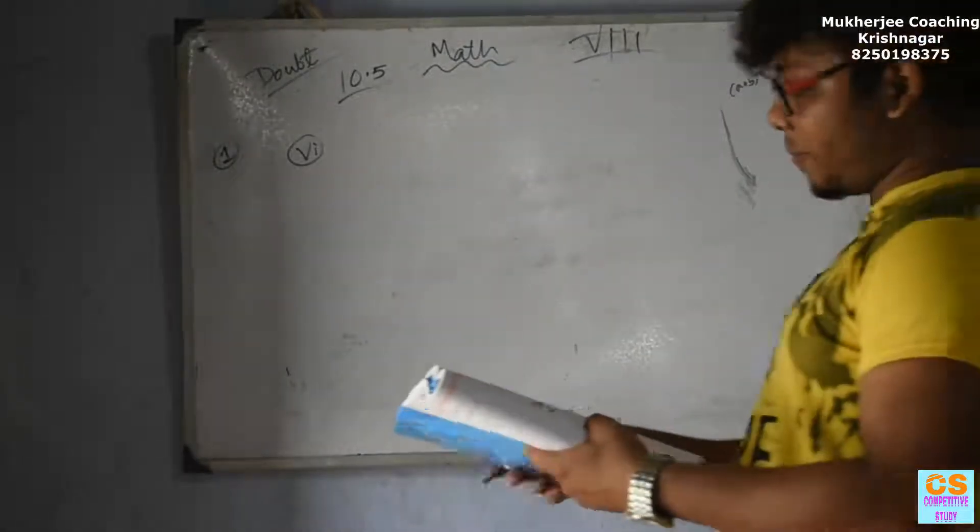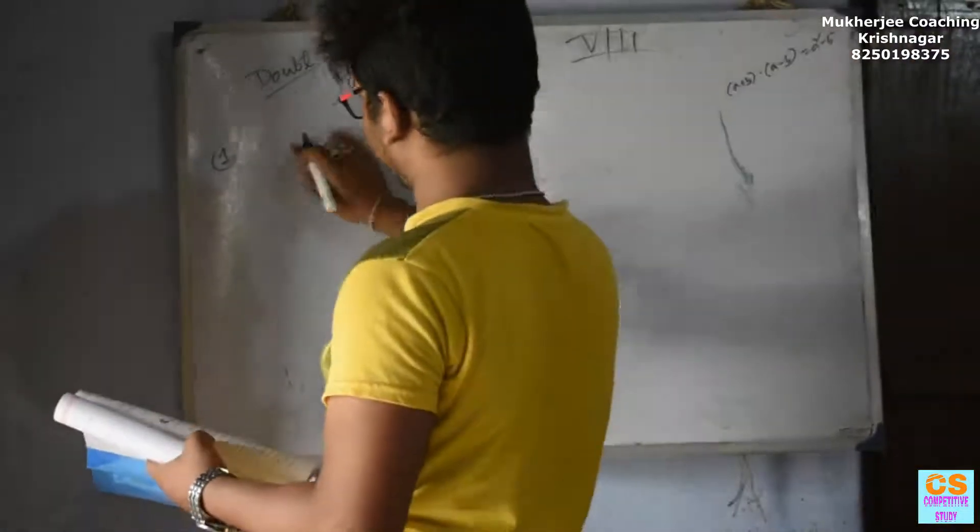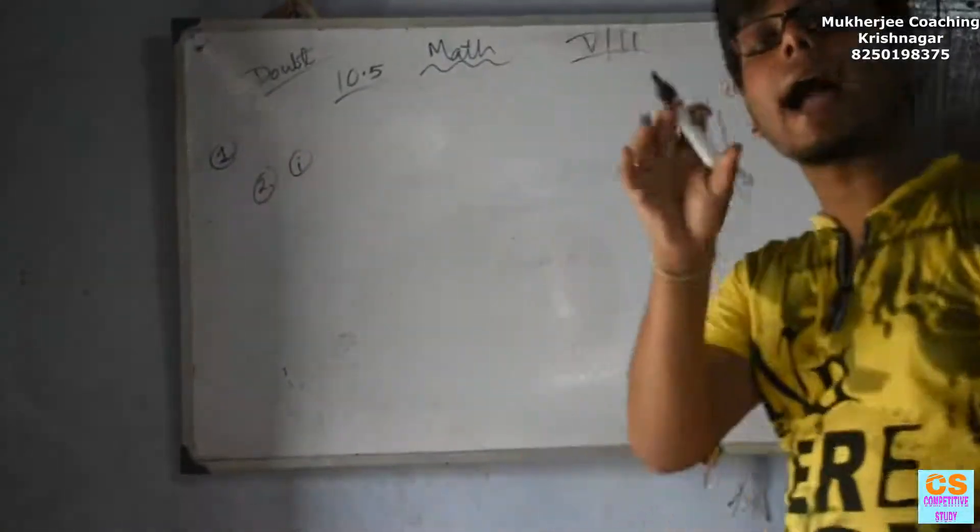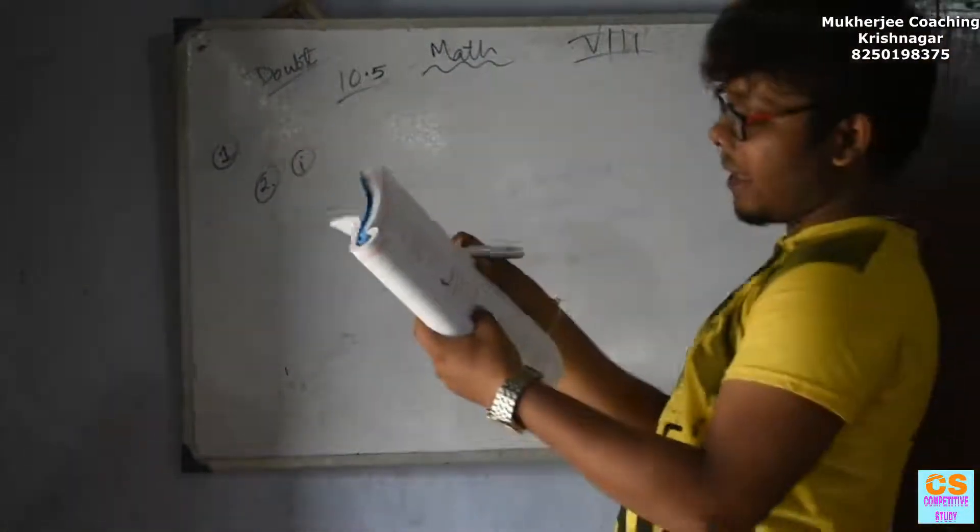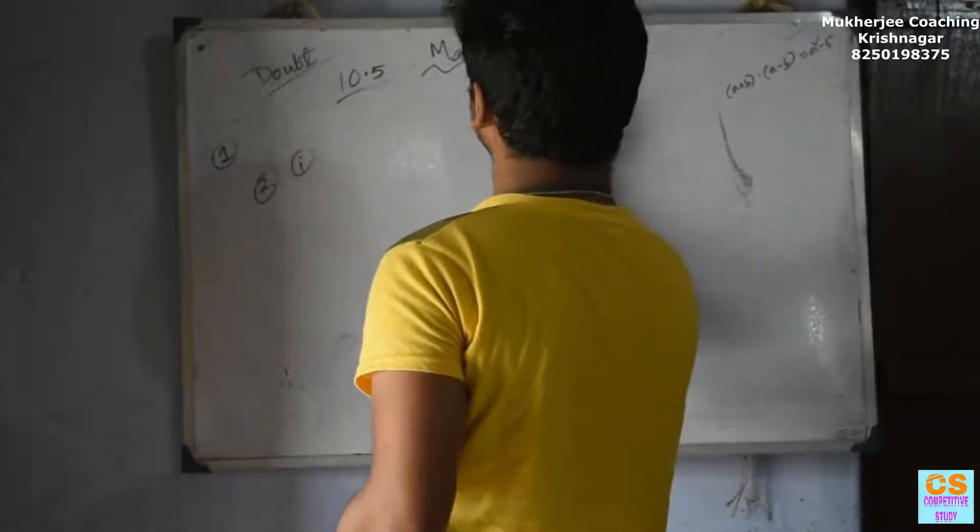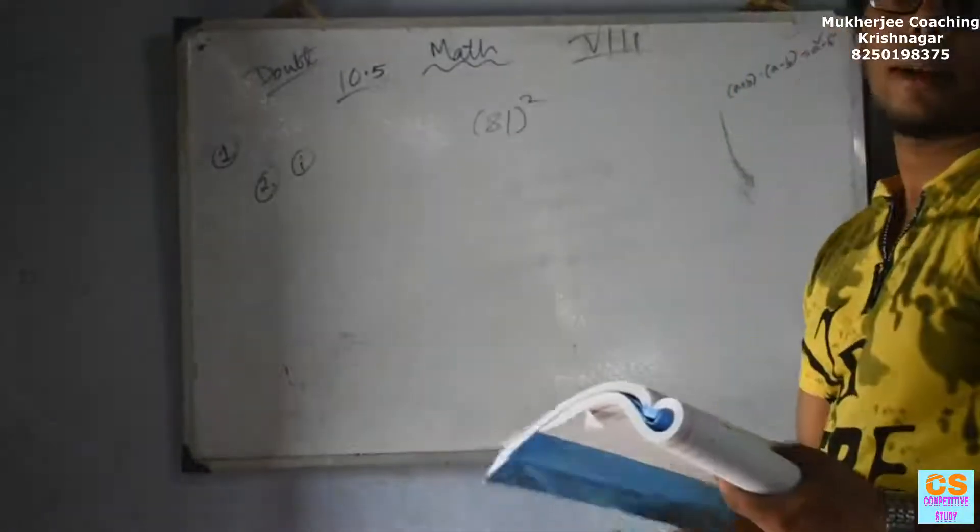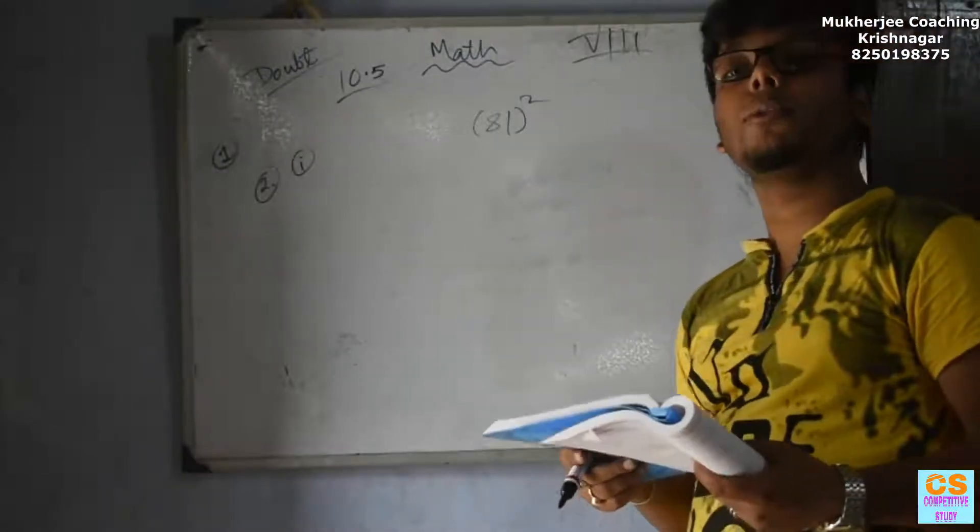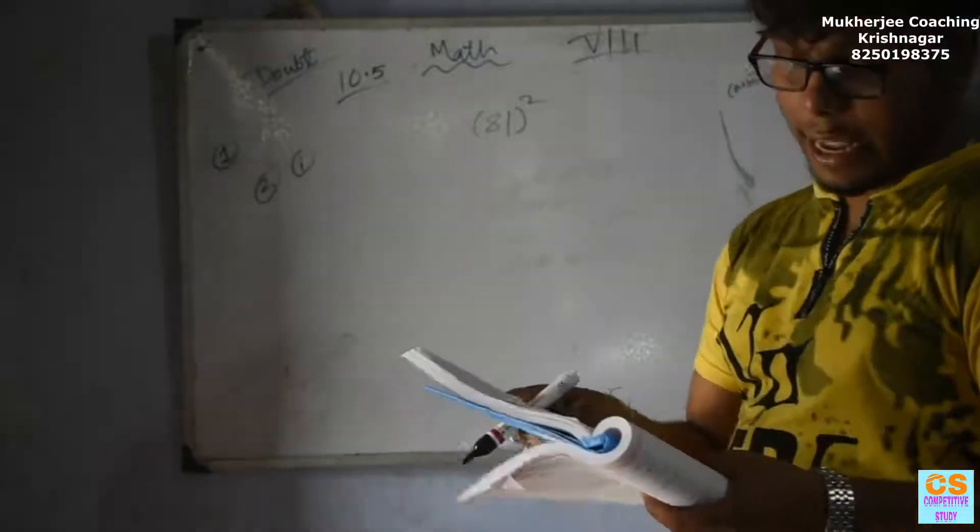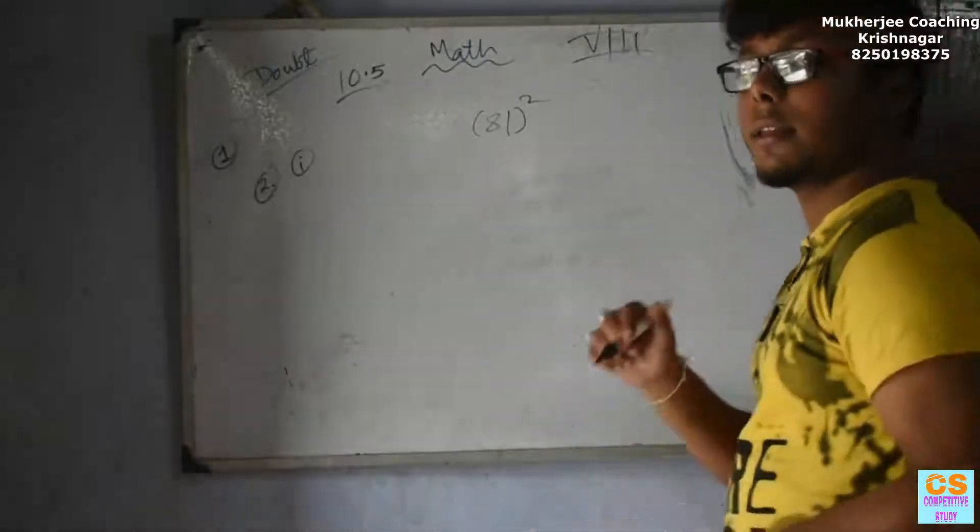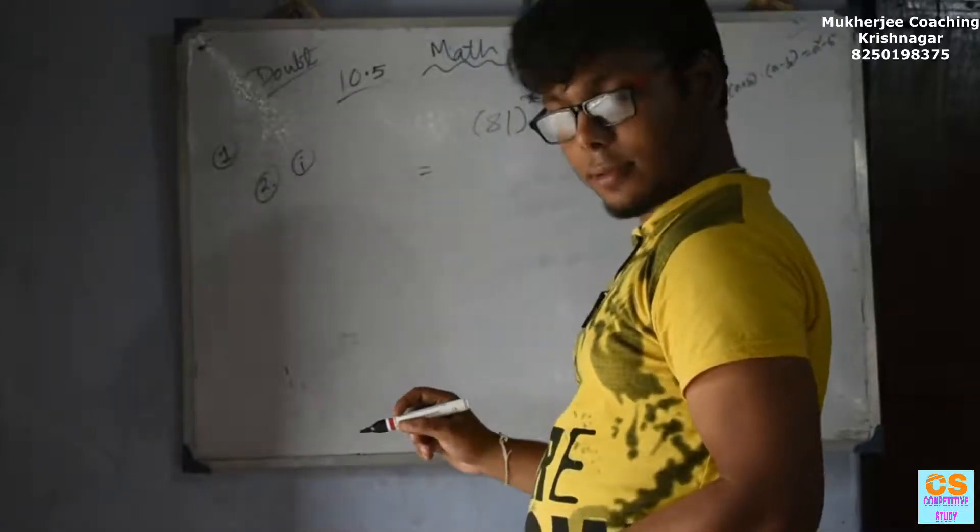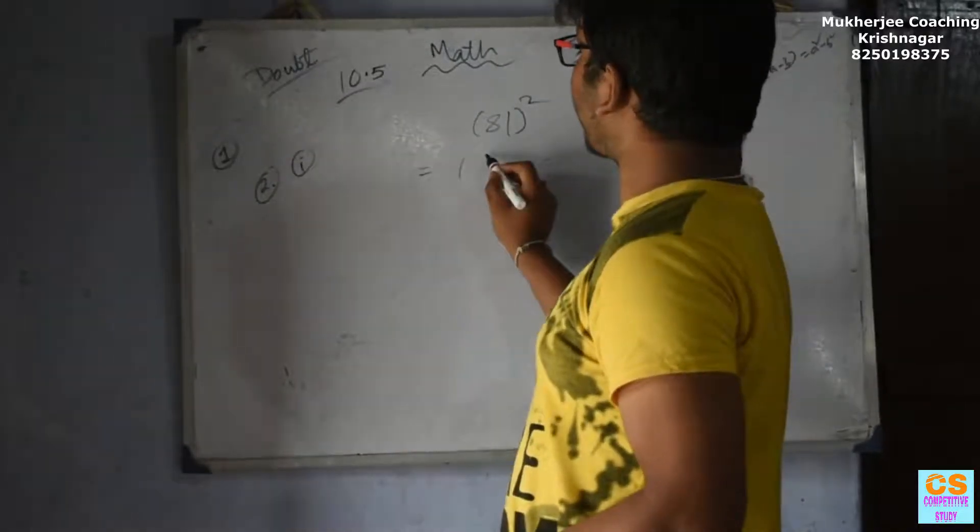This is problem 10.5. We are going to evaluate 81 squared using the algebraic identity. So we have to evaluate 81 plus square. How do you evaluate the number? 81 into 81. We have to evaluate the number.